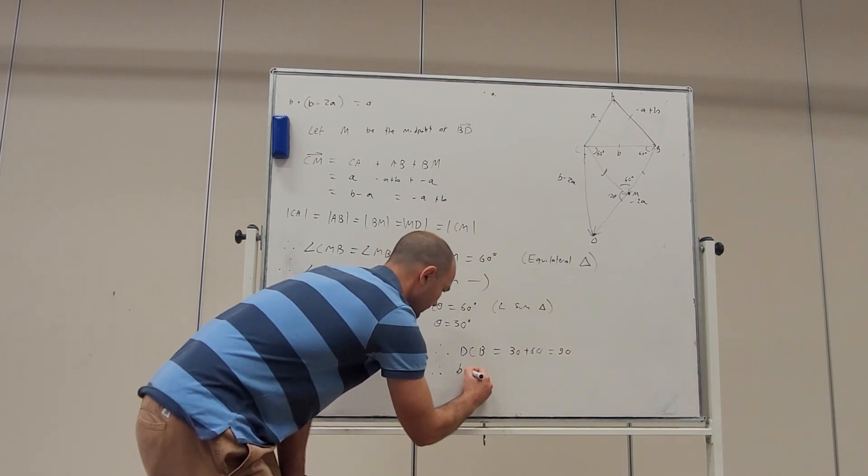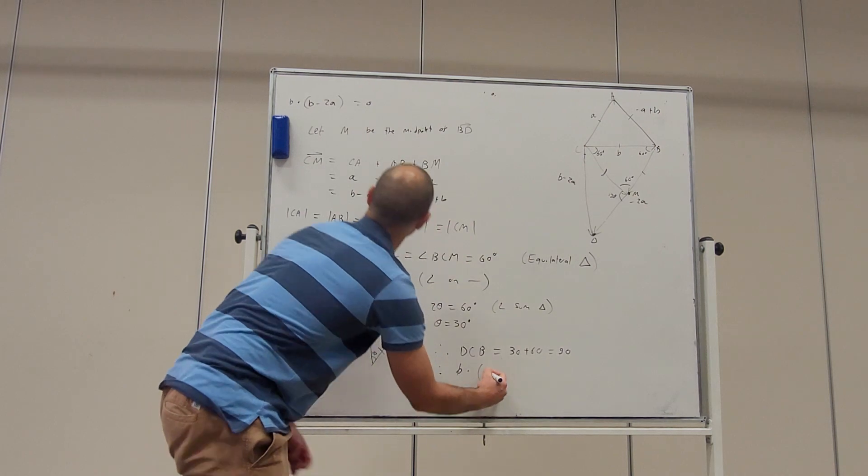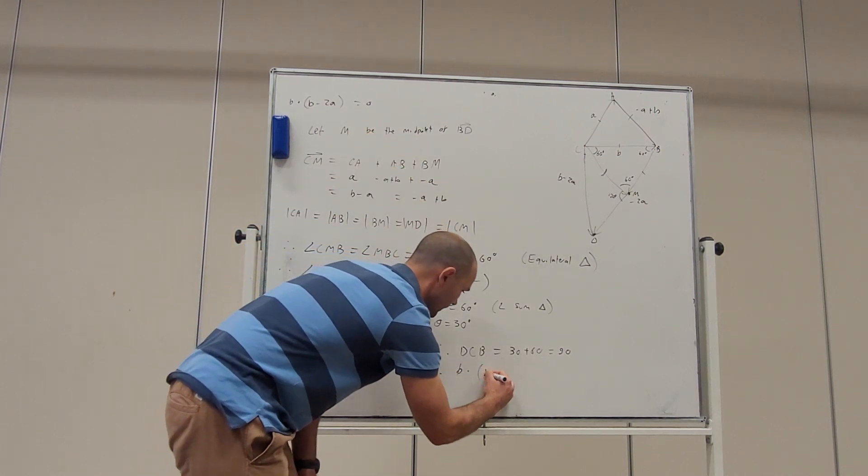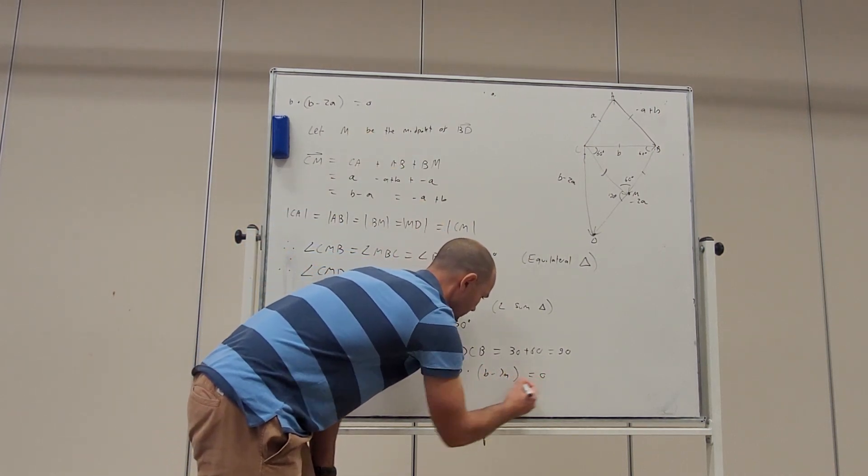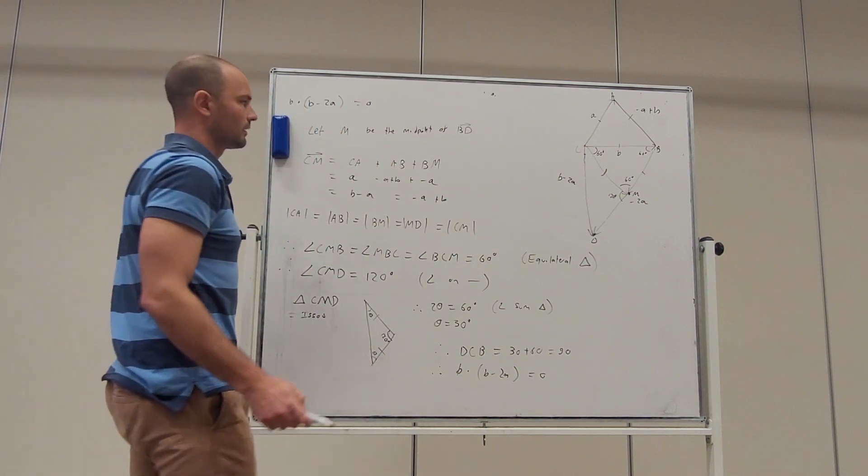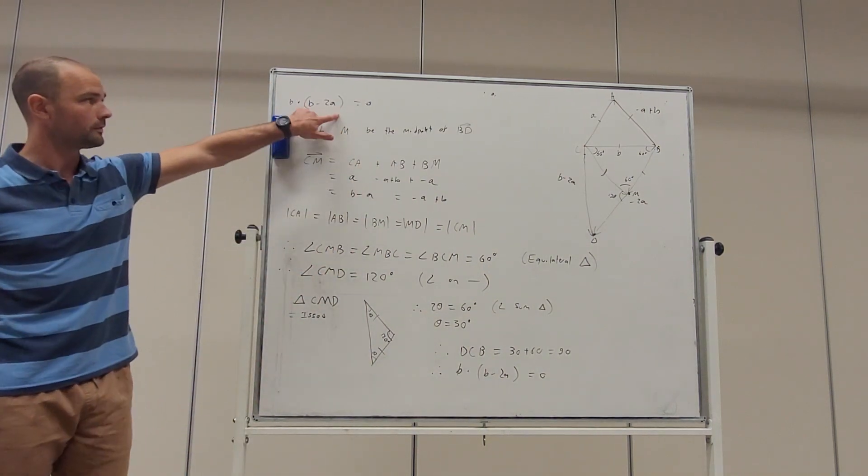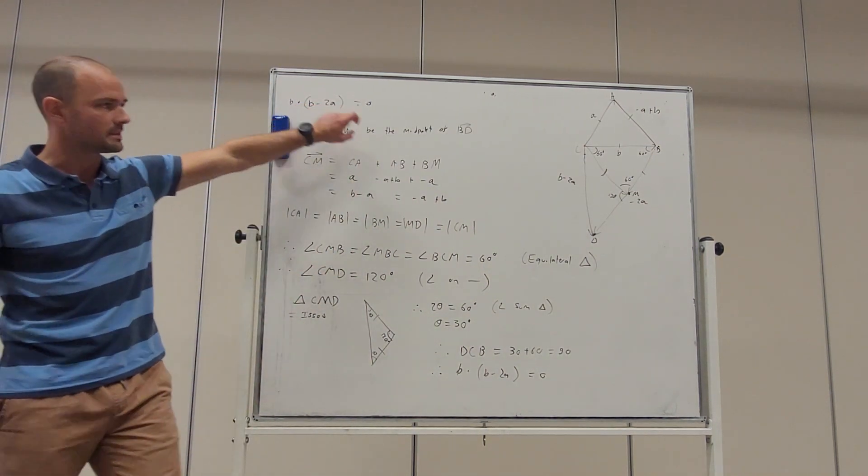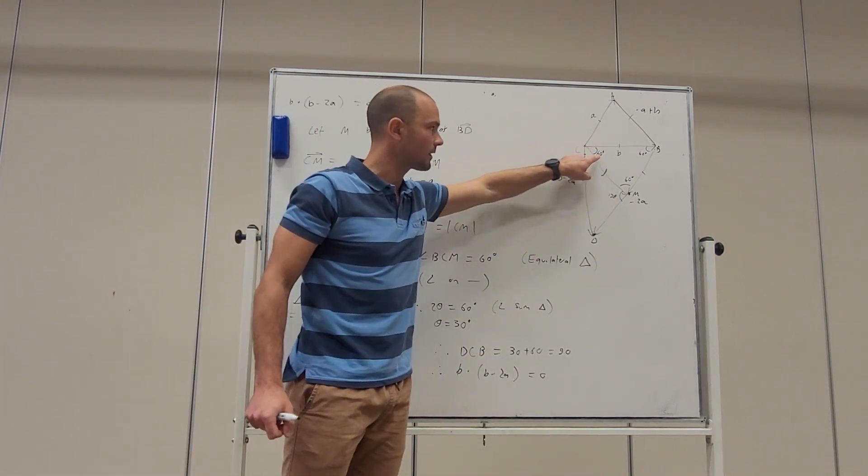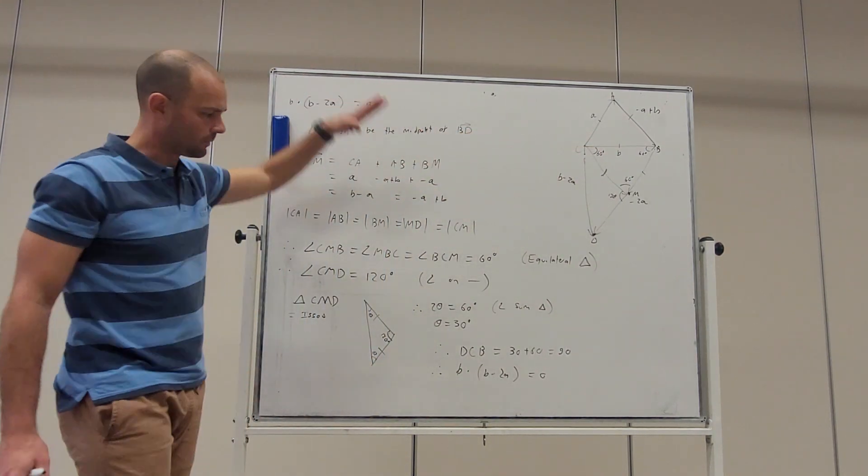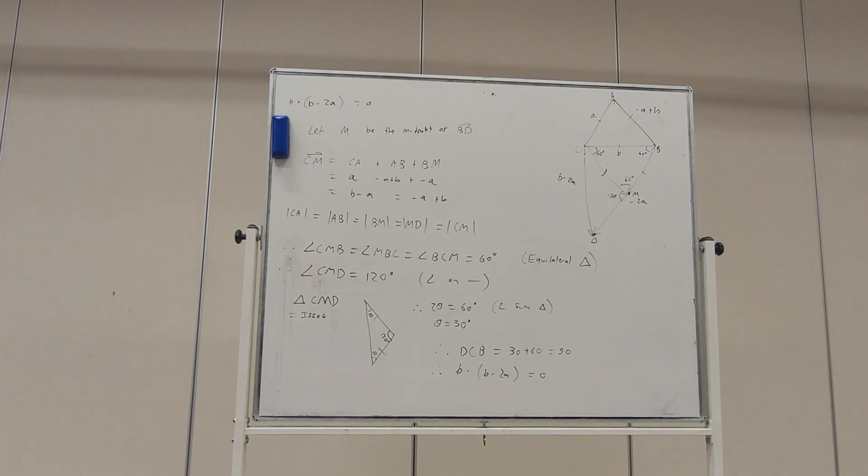And so, therefore, angle DCB is 90. Therefore, the dot product of B and B take 2A is 0. So, all we're doing, we've said, we're asked to prove that this is true. So, that means this angle is 90 degrees. Let's prove that this angle is 90 degrees. And that's what we've done using a bit of deductive geometry there.